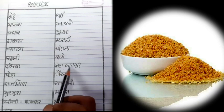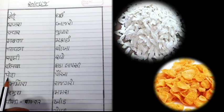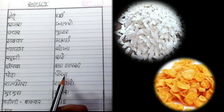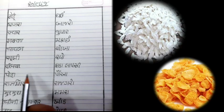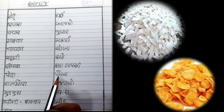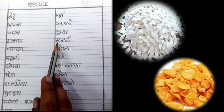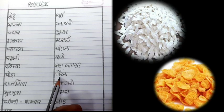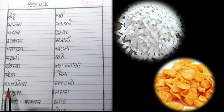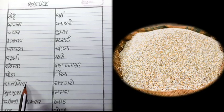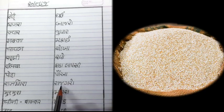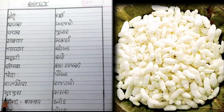ગુજરાતીમાં 'ફાડા'ની 'ફાડા લાપ્સી' પણ બને છે. ત્યાર પછી છે 'પોહા'. મકાઈ અને ચોખામાંથી પણ 'પોહા' બને છે. આ 'પોહા' શબ્દ - હિંદીમાં પણ 'પોહા' કહીશું.